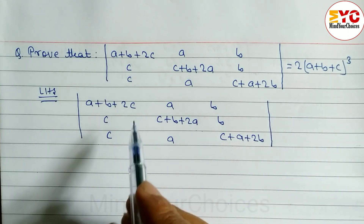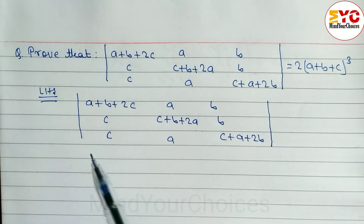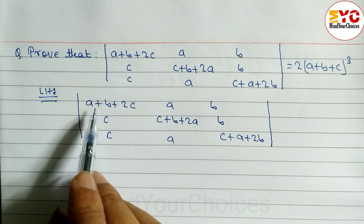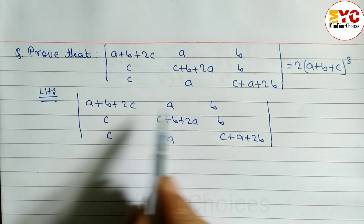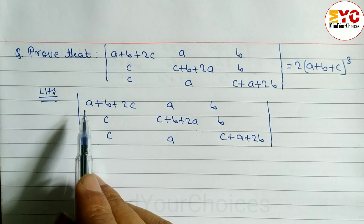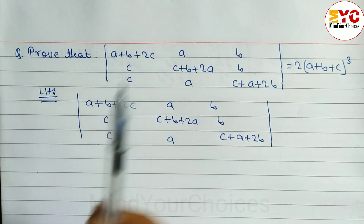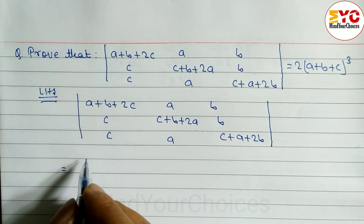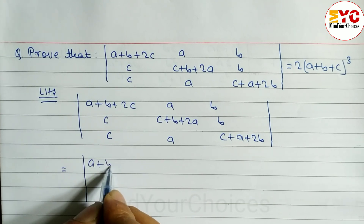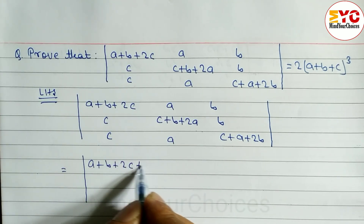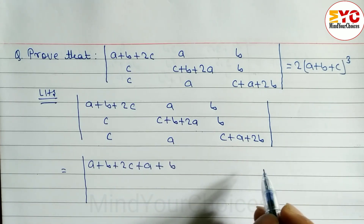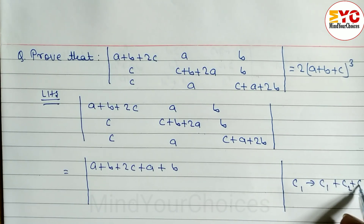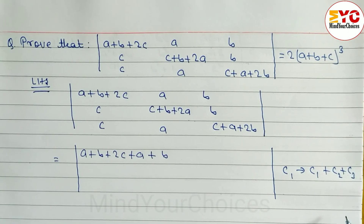Now we have to see the RHS — what we have to prove. Here we see 2(A+B+C). Can we get A+B+C by adding rows or columns? We have to check: when you add the first, second, and third columns into C1, A+A gives 2A, B+B gives 2B, and we can take 2 common to get A+B+C. So we apply the operation C1 → C1 + C2 + C3.